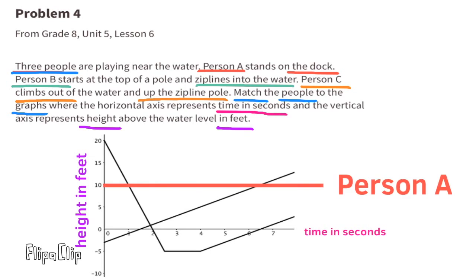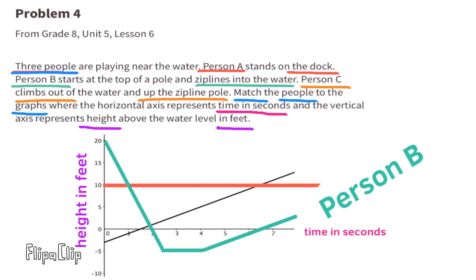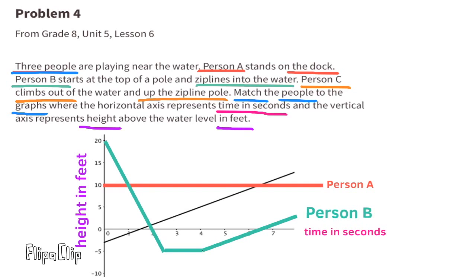This horizontal line represents Person A standing on the dock, approximately 10 feet above the water. The green line represents Person B standing at the top of a pole approximately 20 feet tall, then ziplining into the water. They actually went below the surface of the water, then swam back up to the surface and walked out onto the shore.